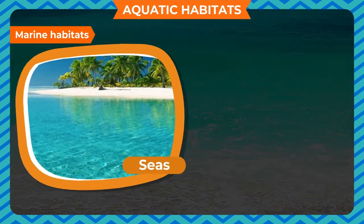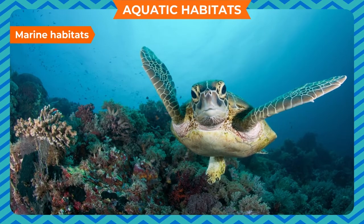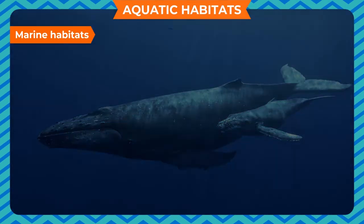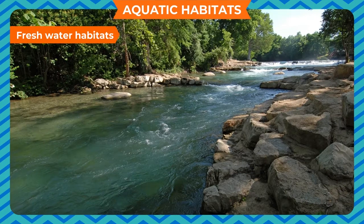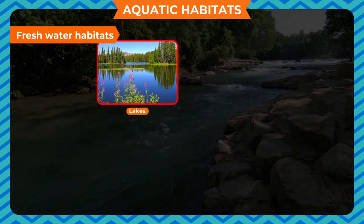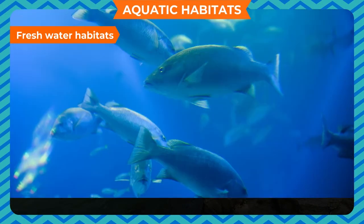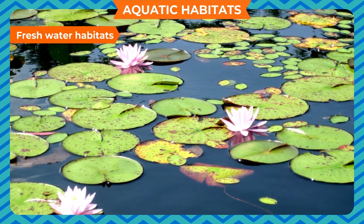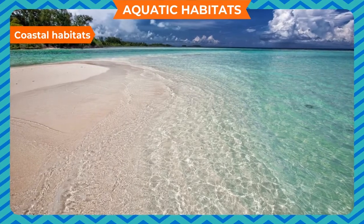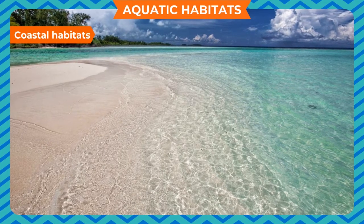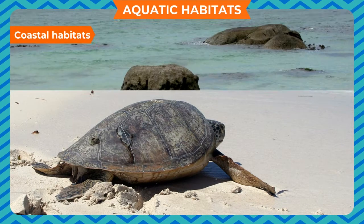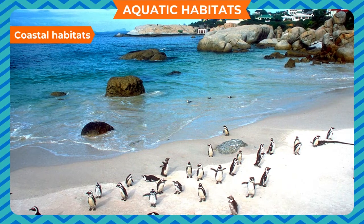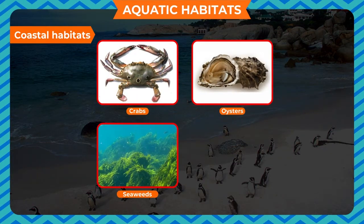Aquatic or water habitats can be subdivided into marine habitats, which refer to the saltwater habitats of seas and oceans — organisms include whales, sharks, sea turtles and seaweeds. Freshwater habitats refer to lakes, rivers, ponds and streams; examples of organisms are various types of fish, water bugs and water lilies. Coastal habitats refer to regions where the sea meets land; organisms found there include crabs, oysters, seaweeds and mangroves.